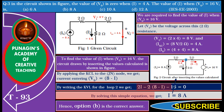we get 2I minus 2 into (8 minus I) minus 16 equals 0. By substituting the values and solving the simple equation, we get I equals 8 amperes. Hence, option B is the correct answer.